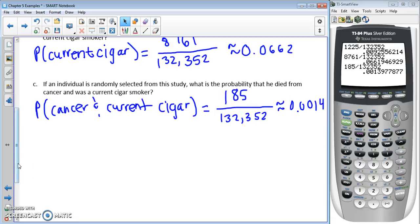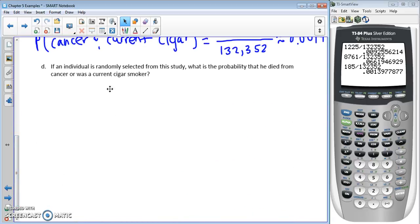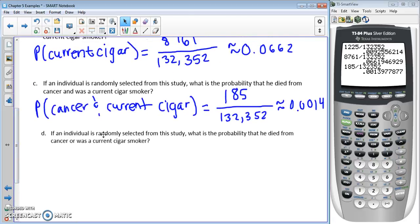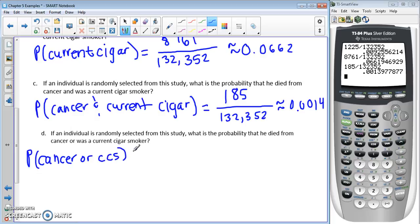Part D: if an individual is randomly selected from the study, what's the probability they died from cancer or were a current cigar smoker? With OR, we ask ourselves: are these events mutually exclusive? We know from part C that they're not, so it's possible to die from cancer and be a current cigar smoker. We need to subtract that out. For cancer or CCS (current cigar smoker), we want probability of cancer plus probability of current cigar smoker minus the probability of both.